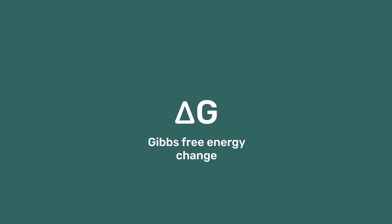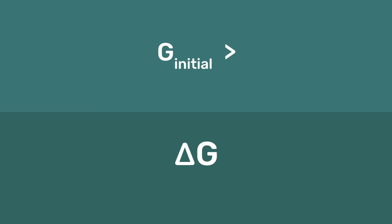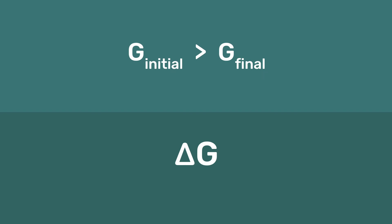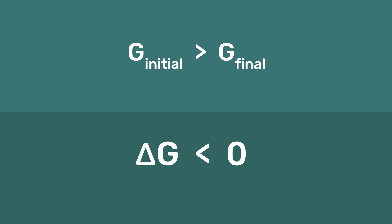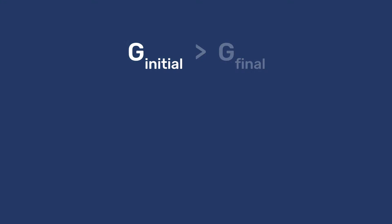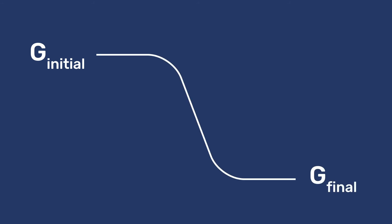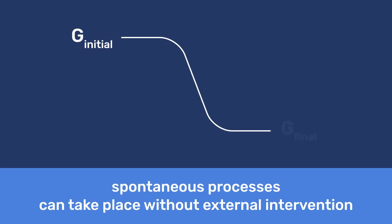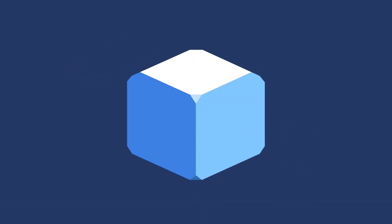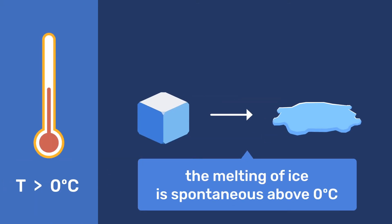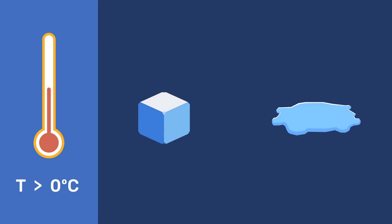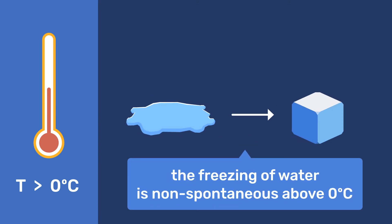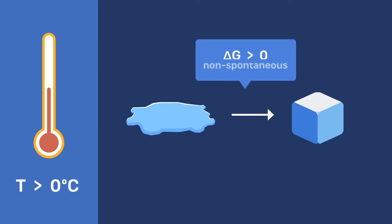Let's consider the Gibbs free energy and start from a value G initial higher than the final one G final. Such transformations have a negative delta G and are defined as spontaneous. The natural tendency of systems is therefore to reduce their free energy. You can think about this by analogy to placing a ball on a slope — its natural tendency is to roll down to the bottom. In thermodynamics, such processes are called spontaneous and can take place without an external intervention. For example, an ice cube should spontaneously melt above zero degrees Celsius. In contrast, non-spontaneous reactions require an external intervention to take place and are characterized by a positive delta G.